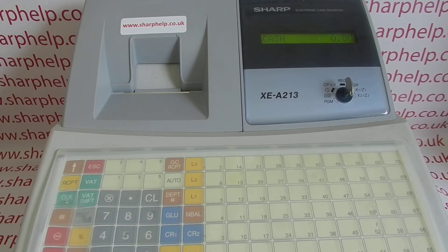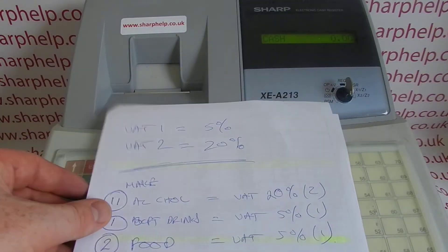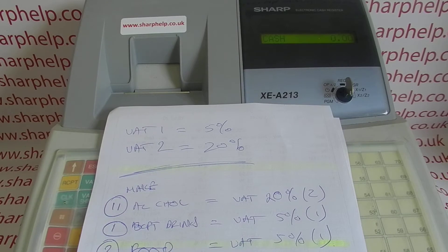Bear in mind that when the machine is out of the box for the first time, the departments have preset VAT codes. Departments 1 to 10 are preset to VAT rate 1, departments 11 to 20 are preset to VAT rate 2, departments 21 to 99 are then at VAT rate 1, and department 21 is actually negative as default. On a previous video I've set up the VAT rates on this machine — my VAT rate 1 is 5% and my VAT rate 2 is 20%.